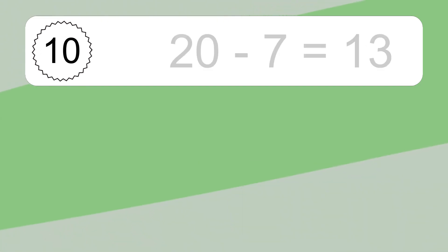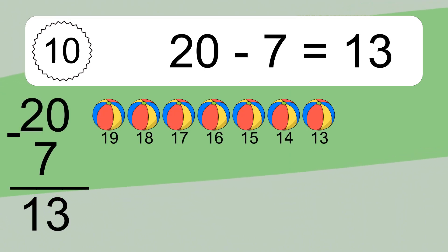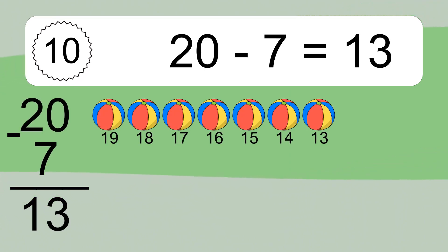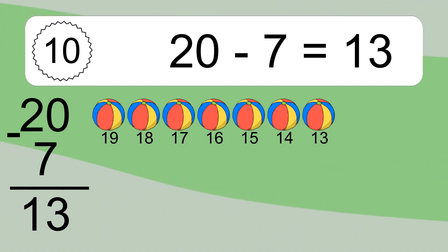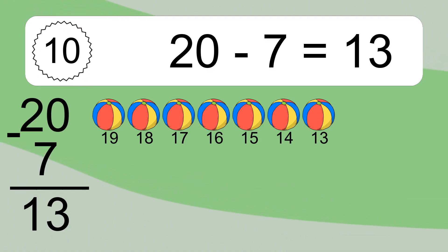20 minus 7 equals what? 20 minus 7 equals 13. Let's count it: 19, 18, 17, 16, 15, 14, 13.